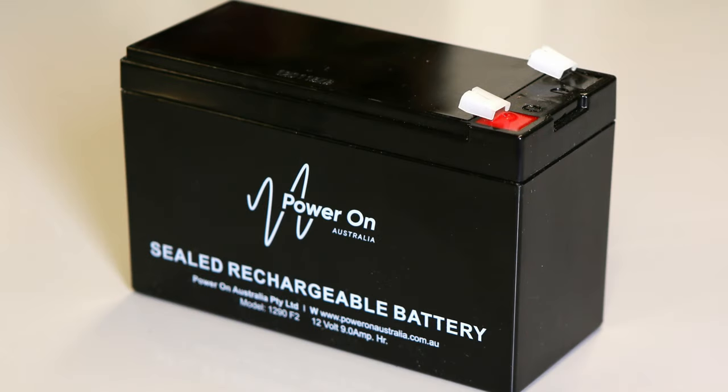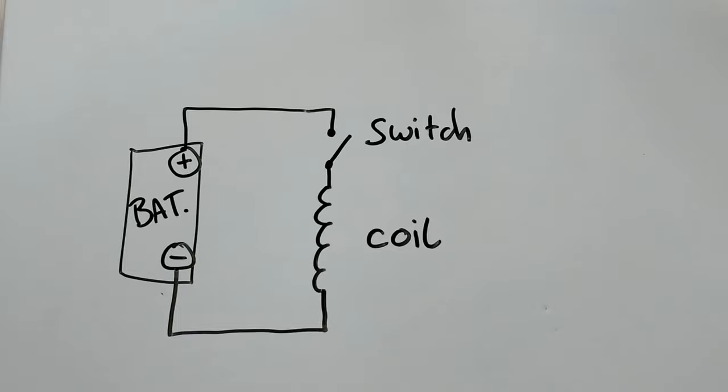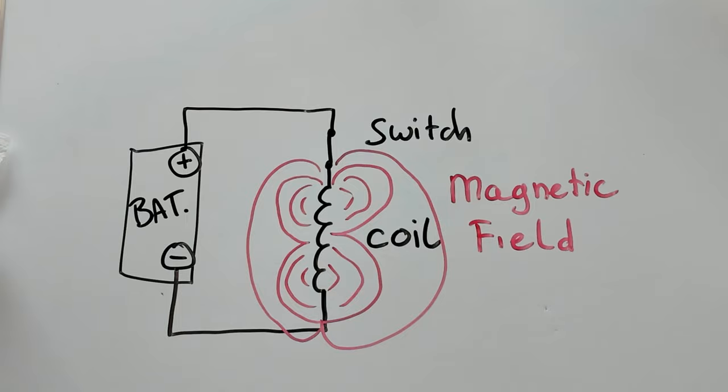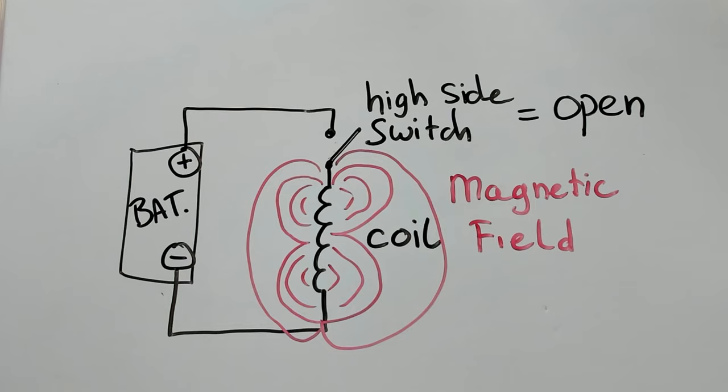Let's first take a look at what is happening with the power supply, the switch and the coil. First I'll use a battery as the power supply. When the switch is closed the power supply provides a dielectric field voltage to the coil. The coil transforms this voltage into a magnetic field which we can measure as a current. Now we can turn off the positive dielectric field voltage supply by opening the MOSFET switch. This is called a high side switch as the positive supply is being switched.